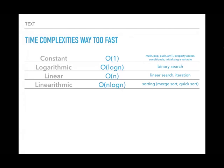Above linear, the next complexity is linearithmic — a fancy term mostly used by computer scientists to sound snobby.